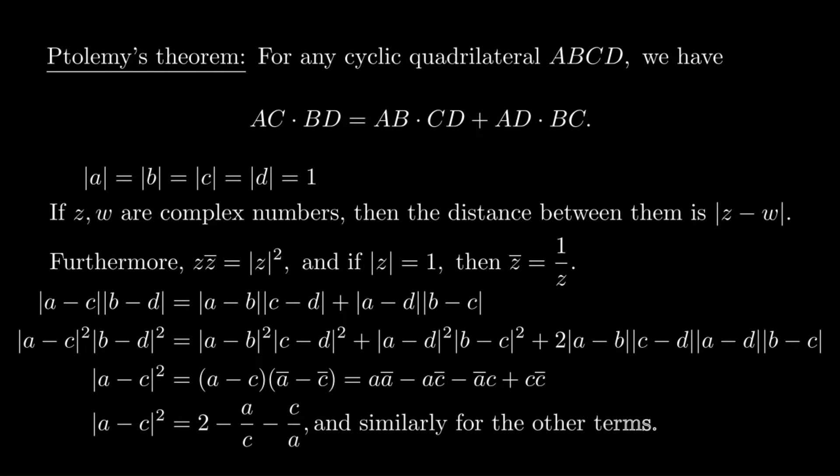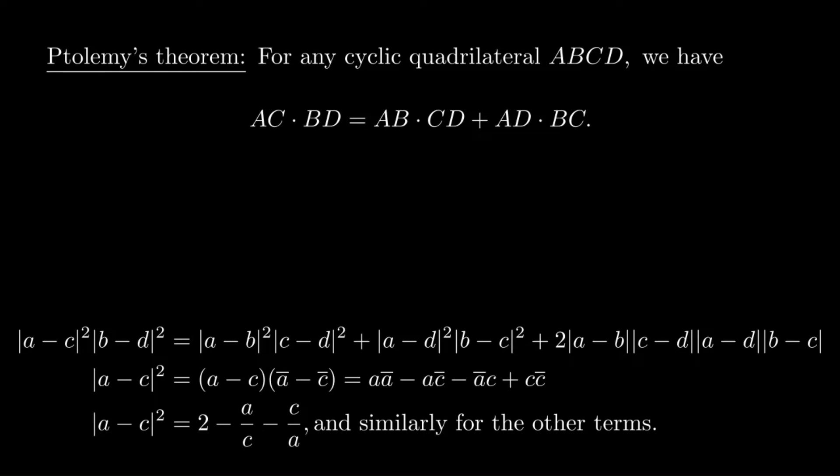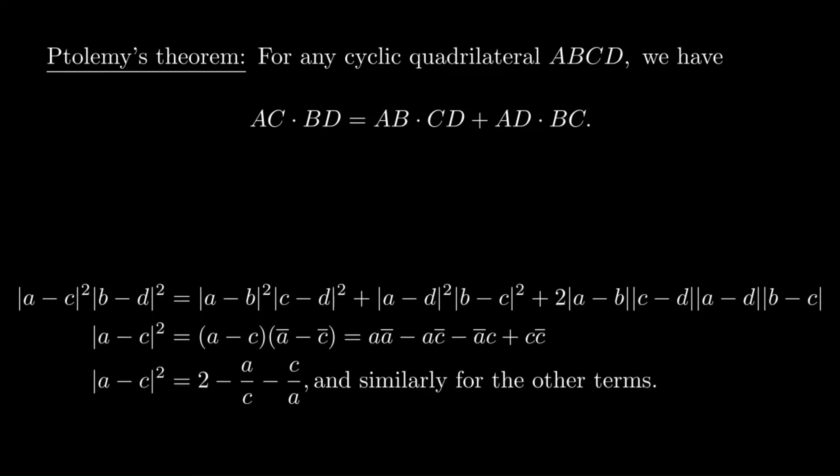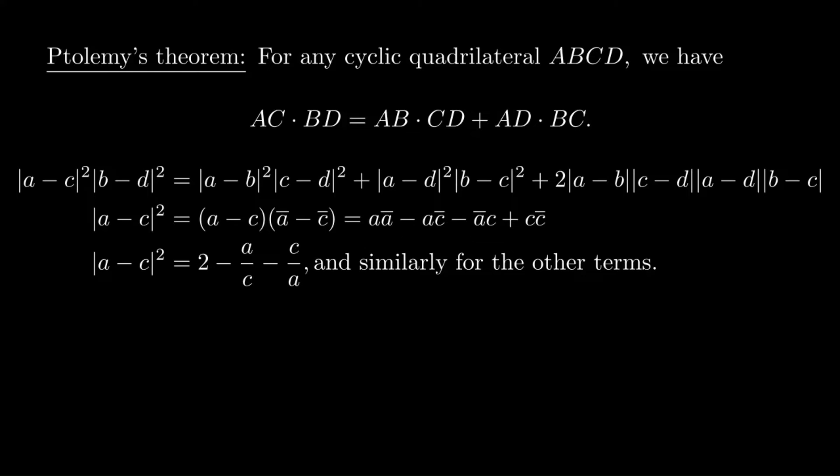That takes care of almost everything except we still have this product on the right side that doesn't have any squares in it. We need to move everything else over to the left and then square one more time, and that's how we get this pretty nasty looking identity. But at least in theory, this is something we could expand out.